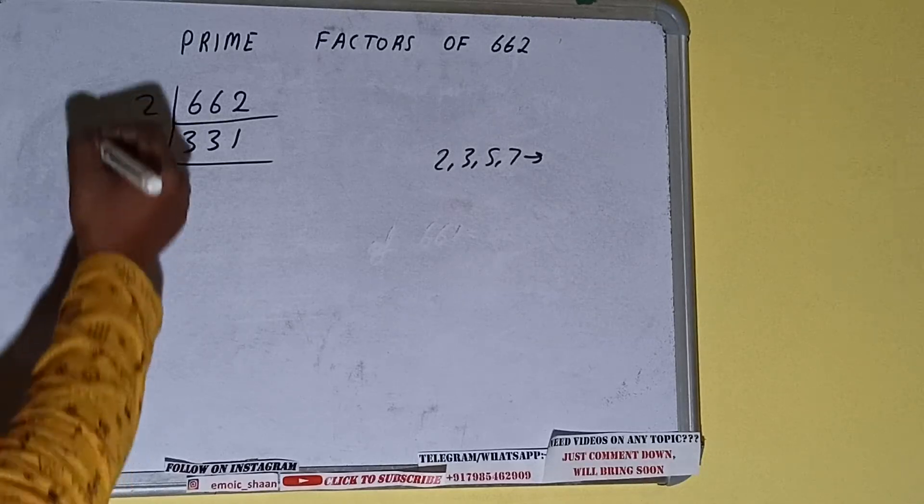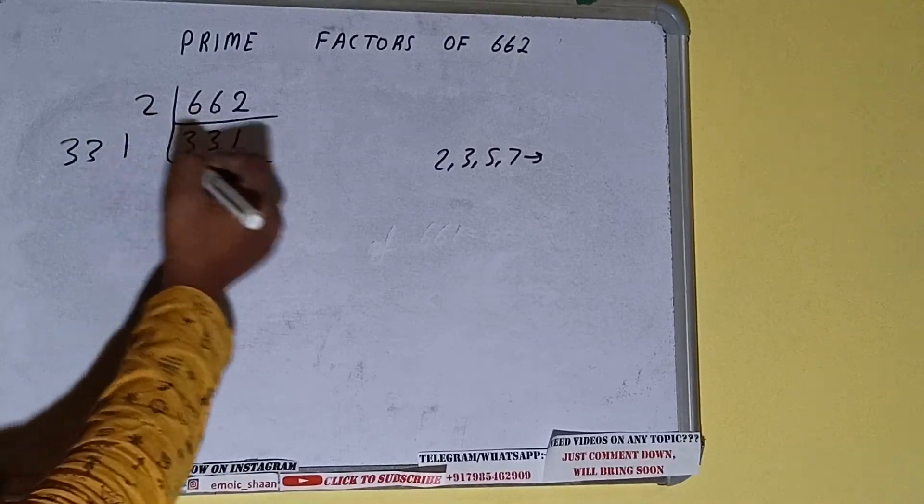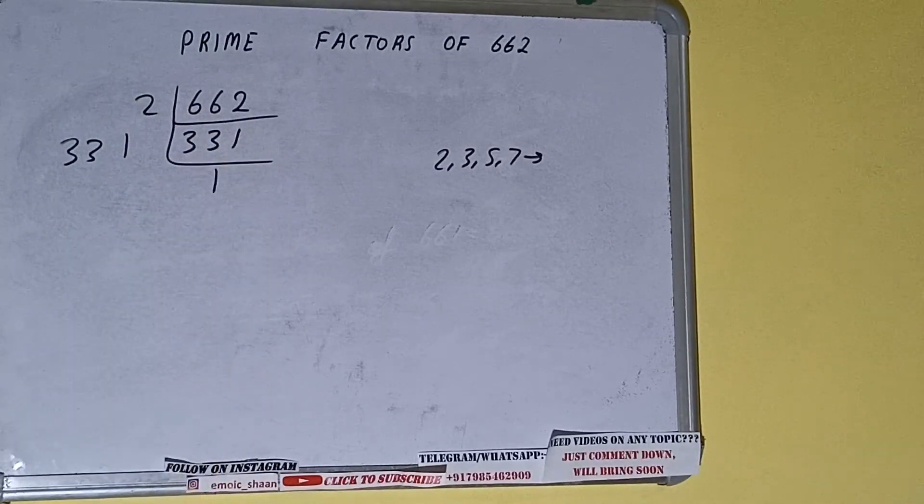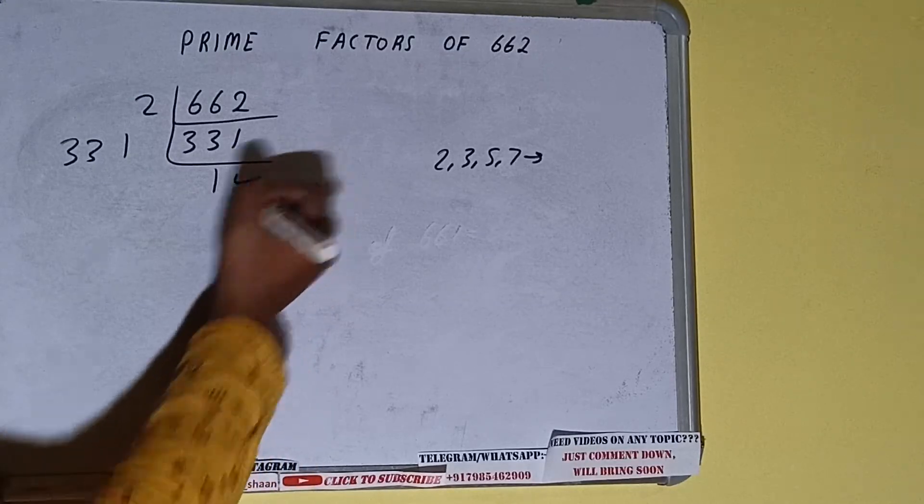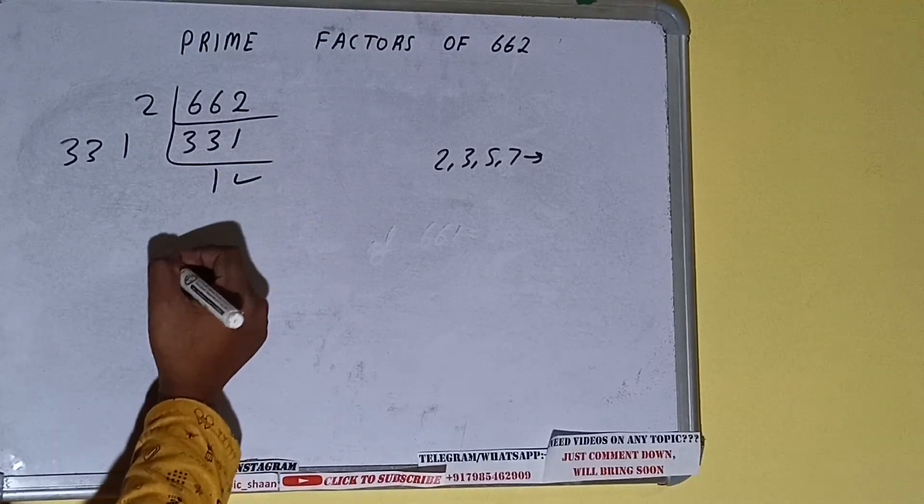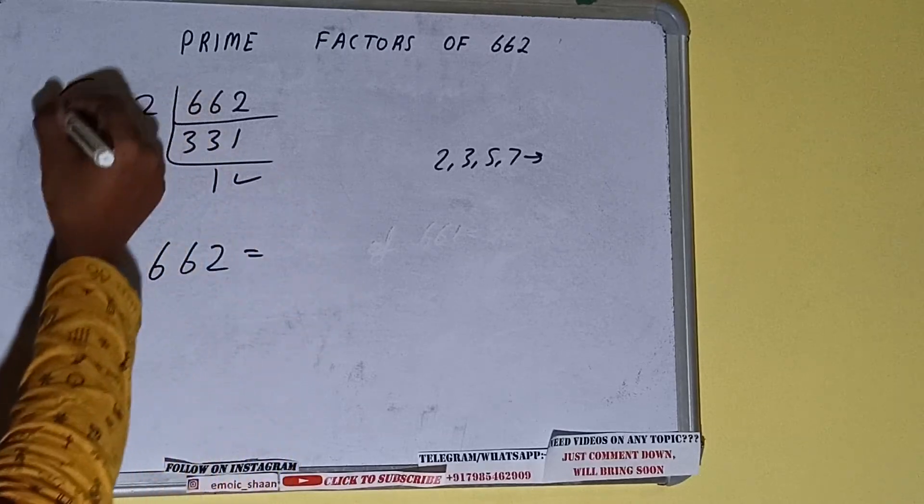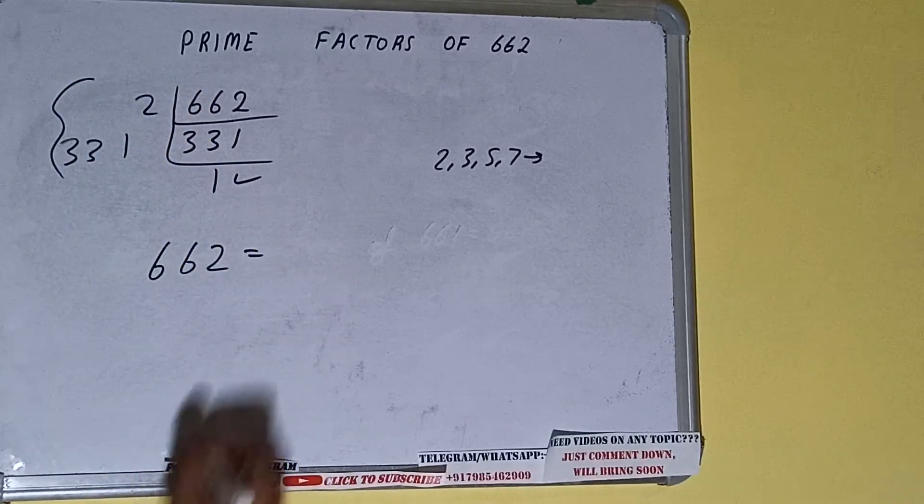So it is only divisible by itself, that is 331, and once we do so we'll be getting 1. Once we get 1, we need to stop and do one last thing. That is, prime factor of 662 is equal to multiply whatever we have on the left hand side.